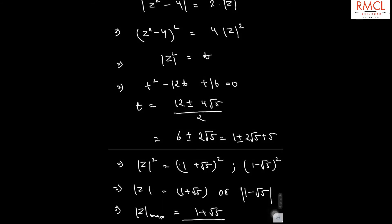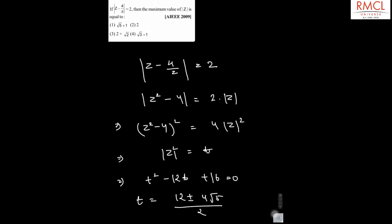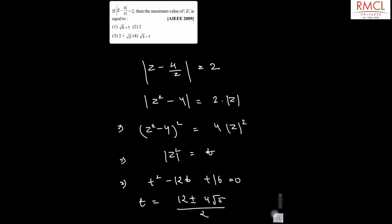So, this is the maximum value of mod z, 1 plus root 5. Therefore, the correct option is option number 1.